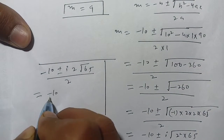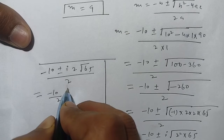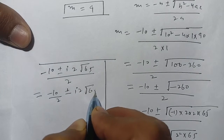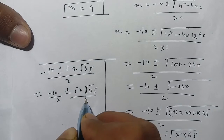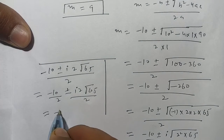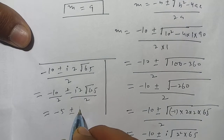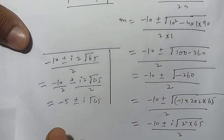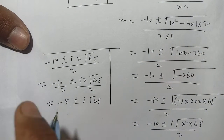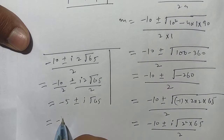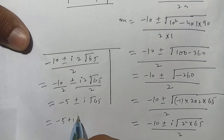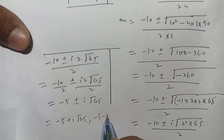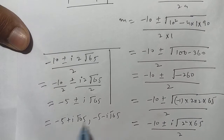Simplifying, (-10 ± 2i√65) / 2 = -5 ± i√65. The two complex roots are m = -5 + i√65 and m = -5 - i√65.